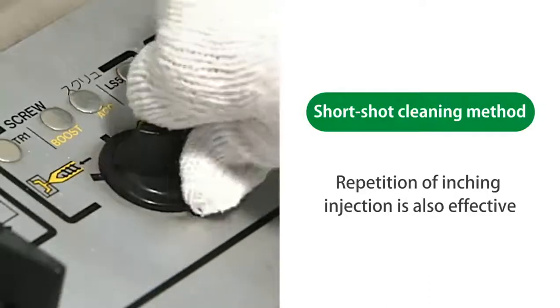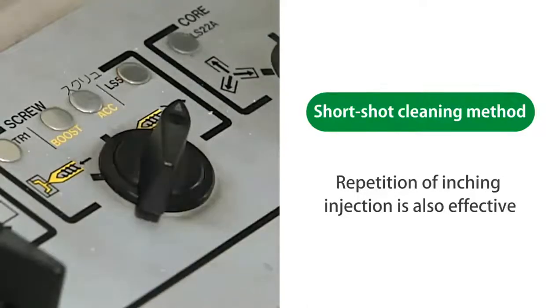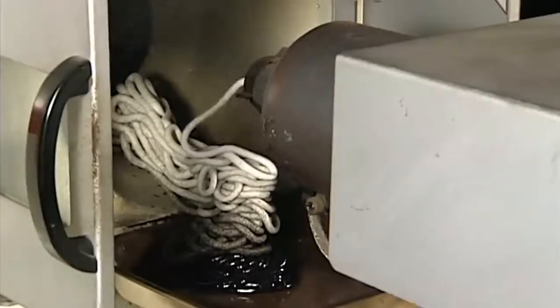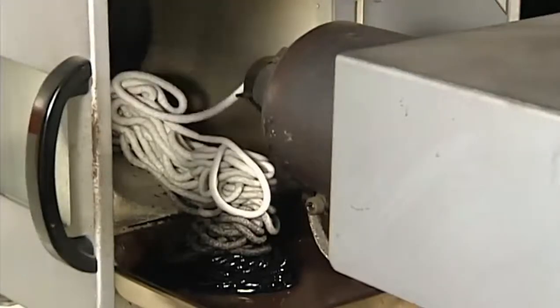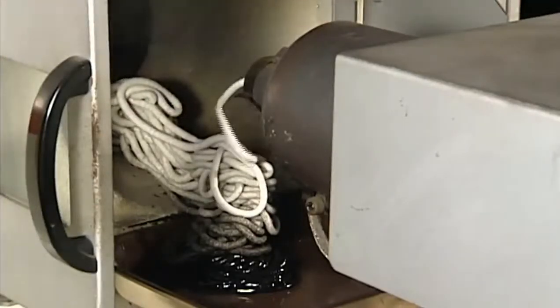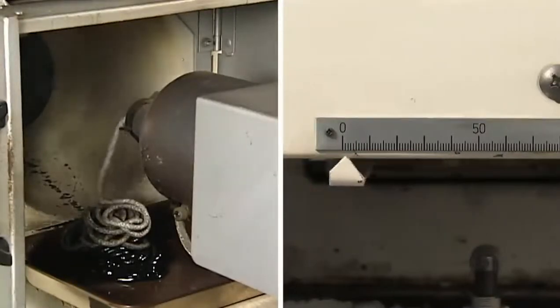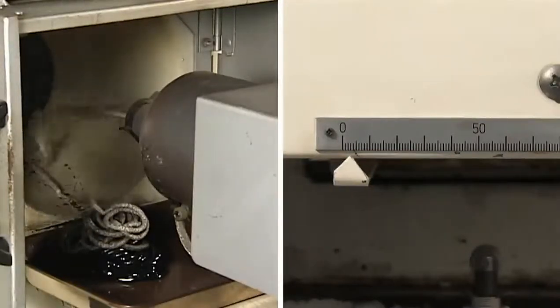Repetition of inching injection is also effective. This is a relatively simple method that can be done by simply changing the shot size and back pressure. Please try this method when the high scrubbing grade or IMX cannot completely eliminate contamination.